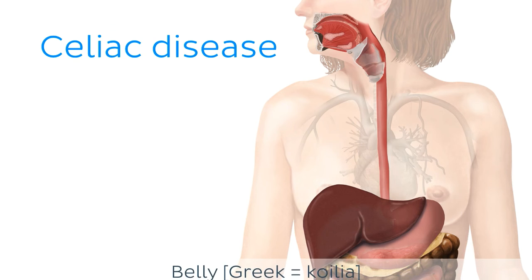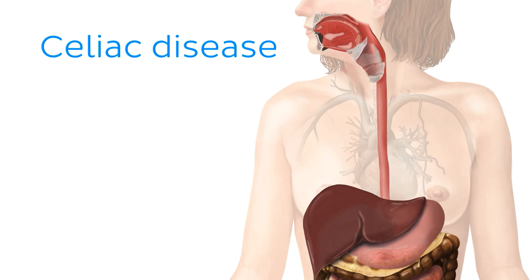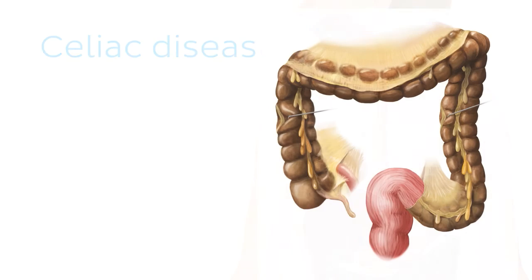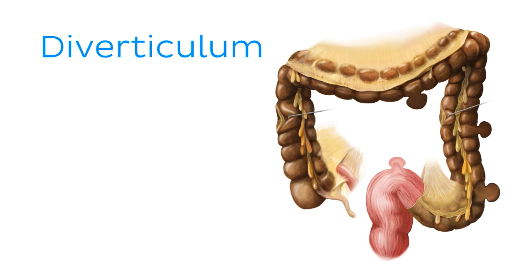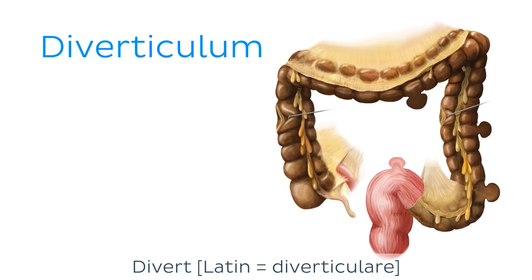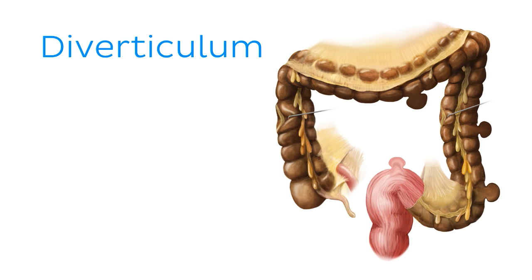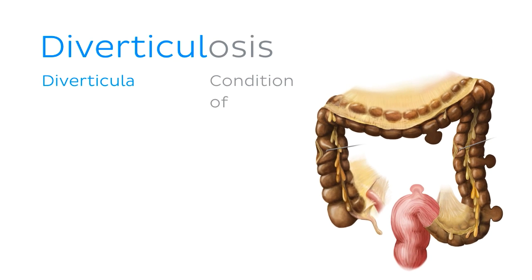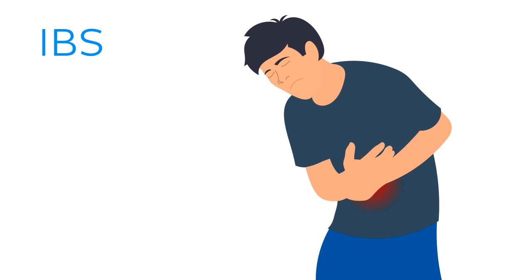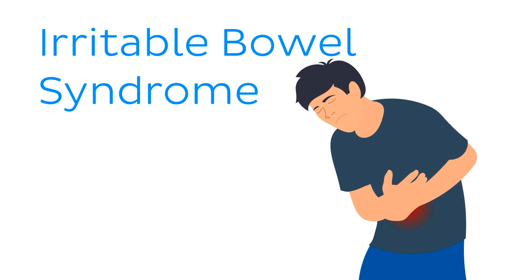Celiac disease is a chronic disorder characterized by a sensitivity to gluten and malabsorption in the small intestine due to inflammation. An intestinal diverticulum is a sac or pouch formed by the protrusion of the mucous membrane through the muscular coat of the intestine. In a clinical setting, you will see this mentioned with the condition diverticulosis, which is the process of the formation of the sacs, or diverticulitis, which is inflammation of these pouches. Our last condition is IBS, which stands for Irritable Bowel Syndrome. It's mainly characterized by increased motility of the intestines, resulting in bloating, abdominal pain, flatulence, alternating diarrhea and constipation, and mucus in stools.